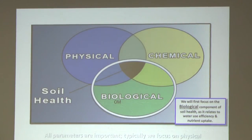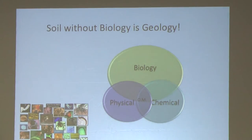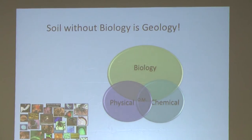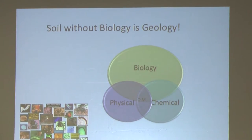In college they taught us soil is physical, chemical, and biological in equal parts. I say it's this: when I say the word soil, it is alive, and biology dominates. Biology builds the physical and helps regulate the chemistry through organic matter. Biology is the priority, especially if you are farming and ranching.